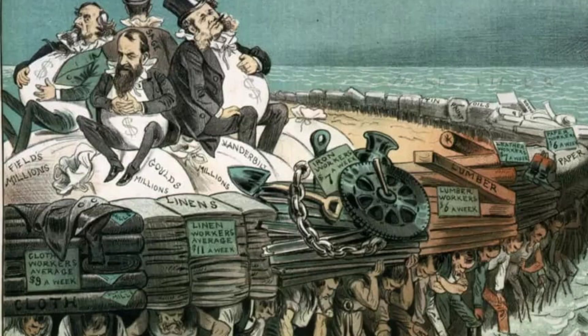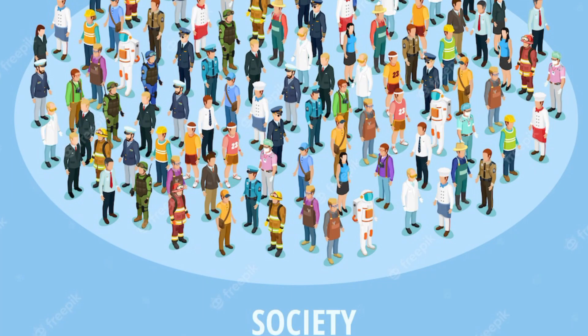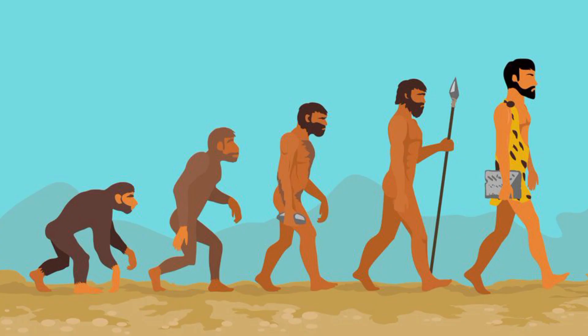Earlier sociologists like Spencer, a famous sociologist with an evolutionary approach, believed that society is developed through the evolutionary process. Groups get profits through their ancestral and natural selection, similar to the Darwinian theory of evolution mentioned in his book — survival of the fittest.